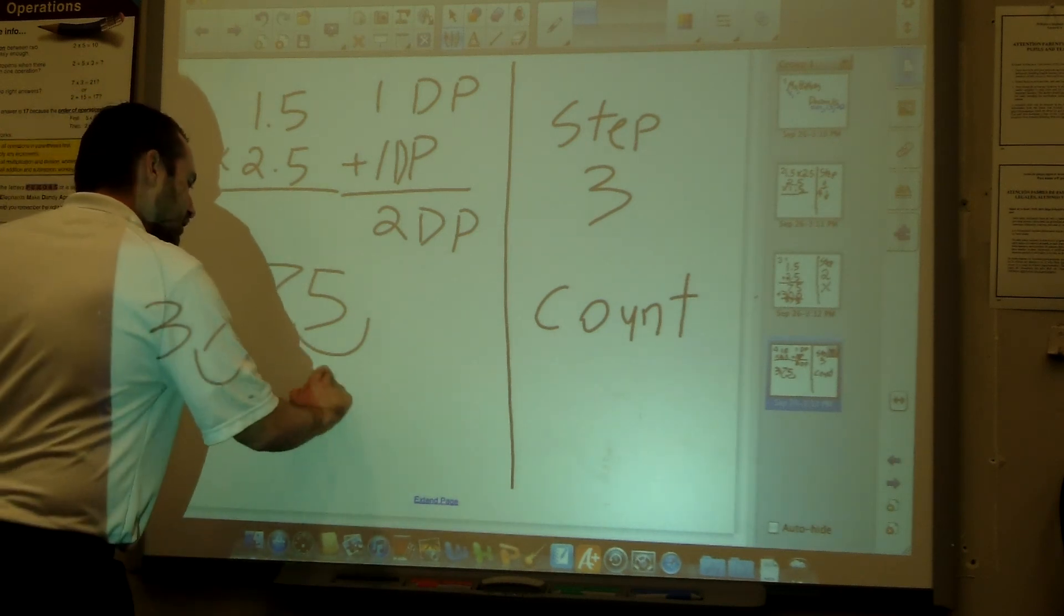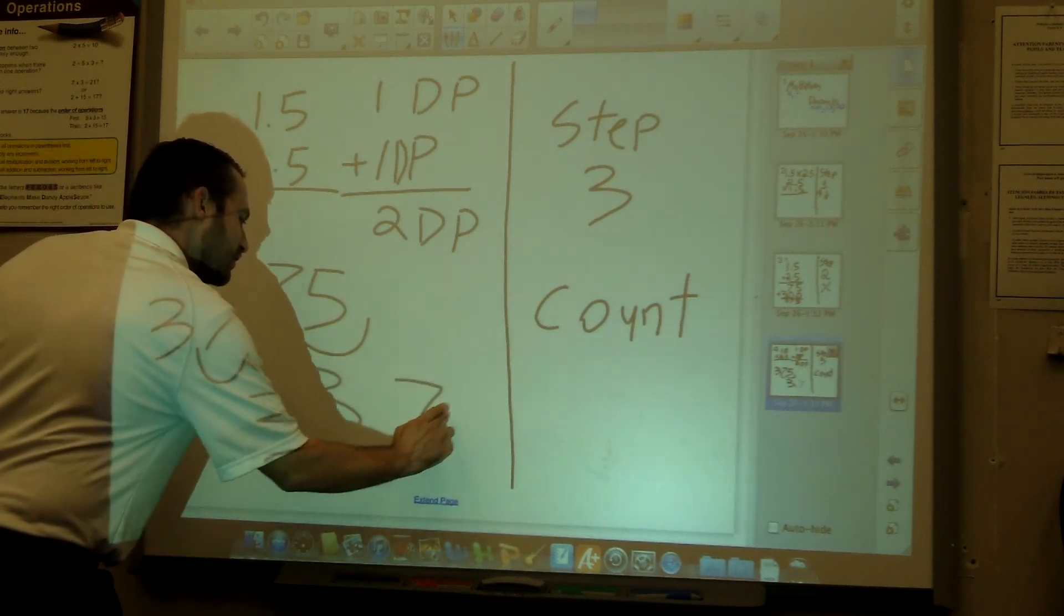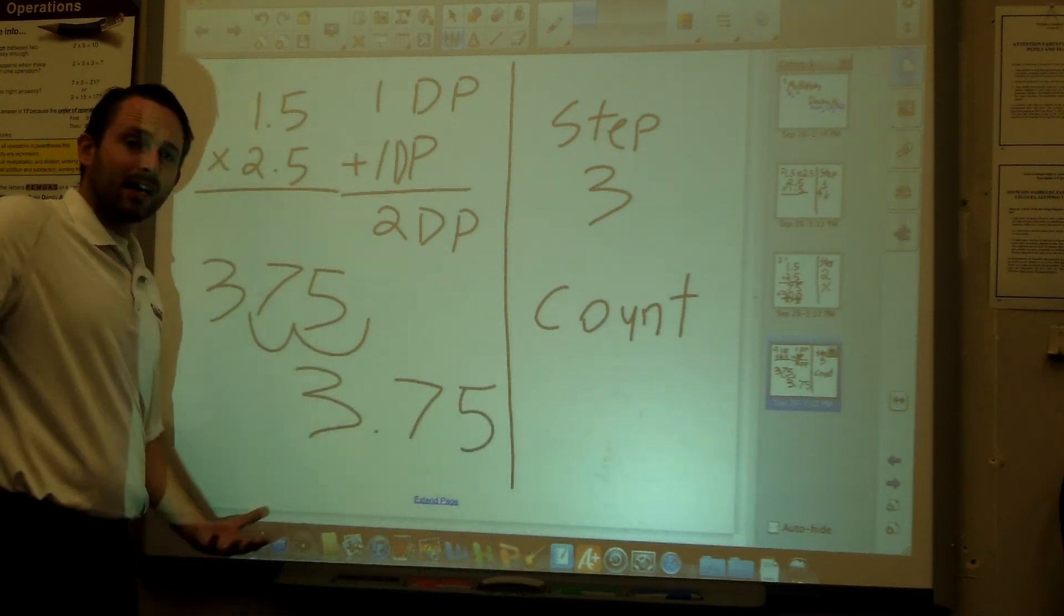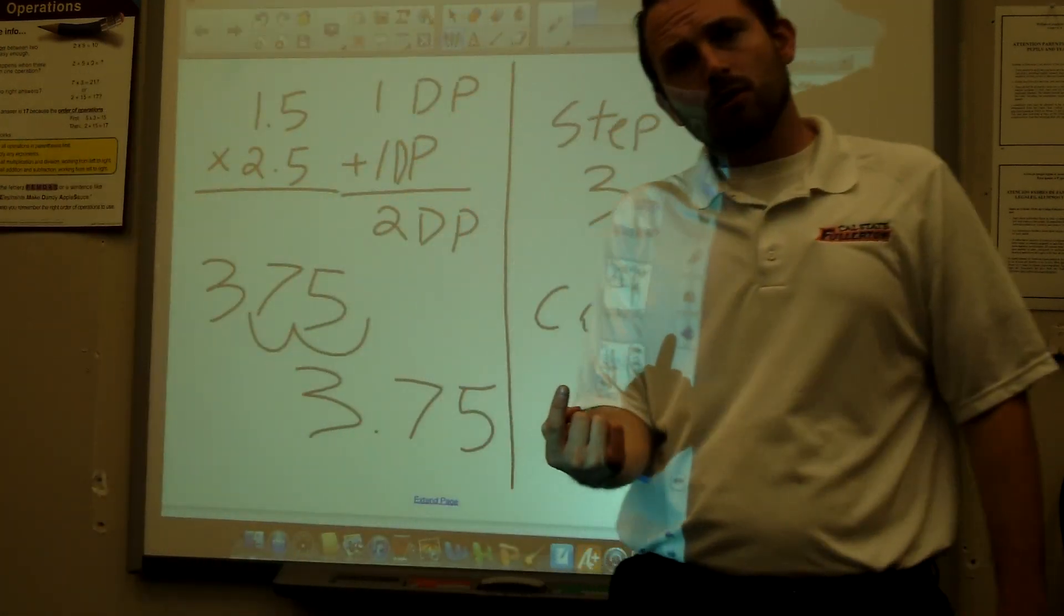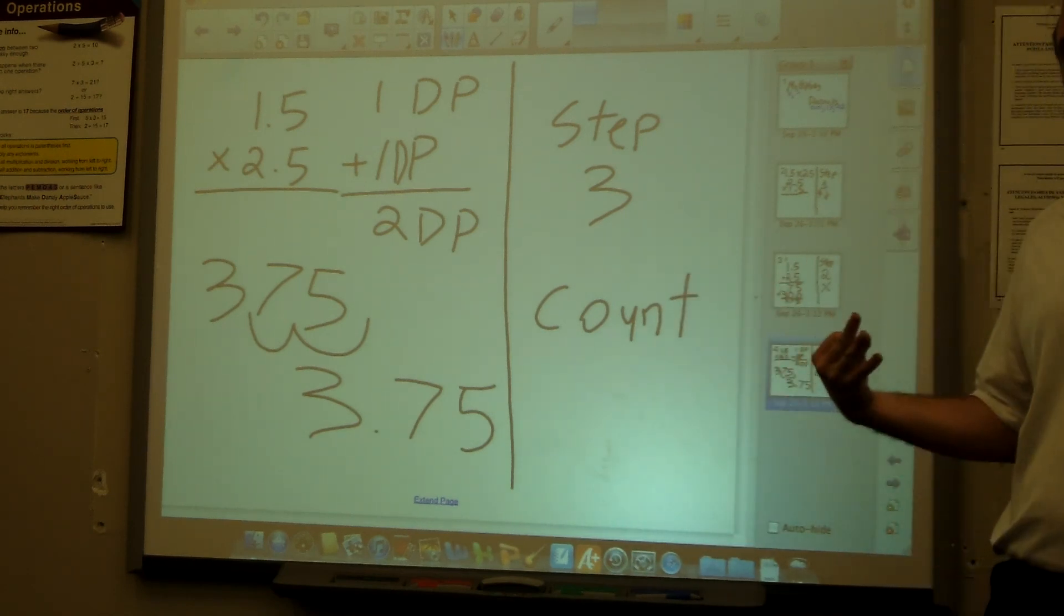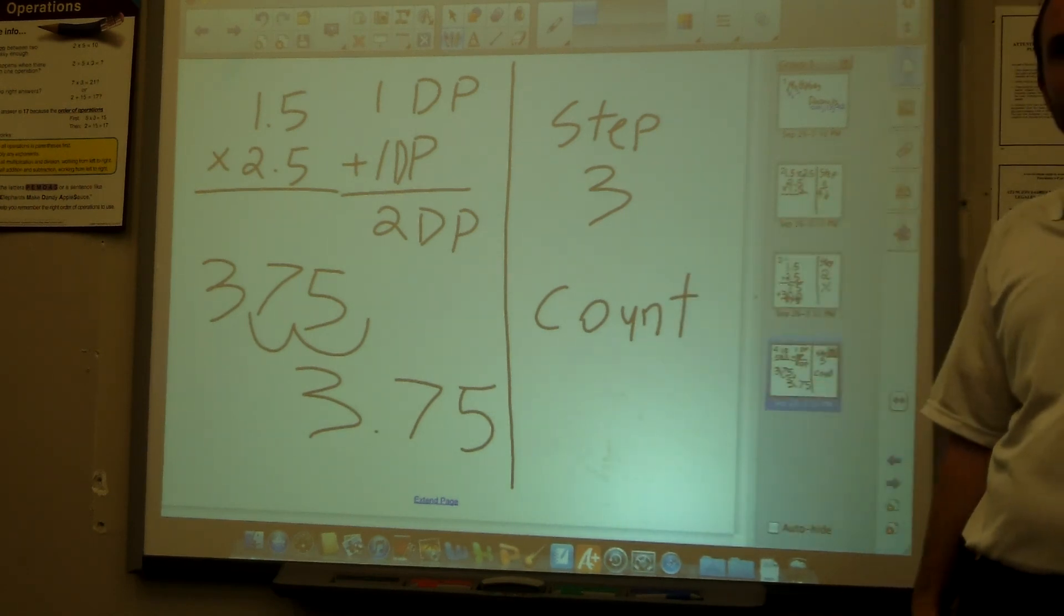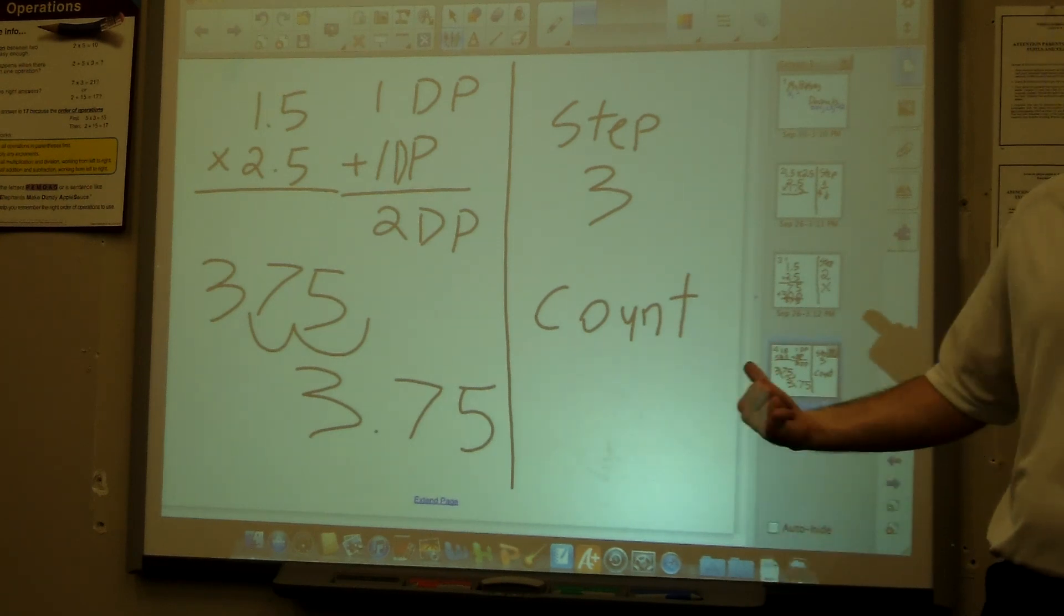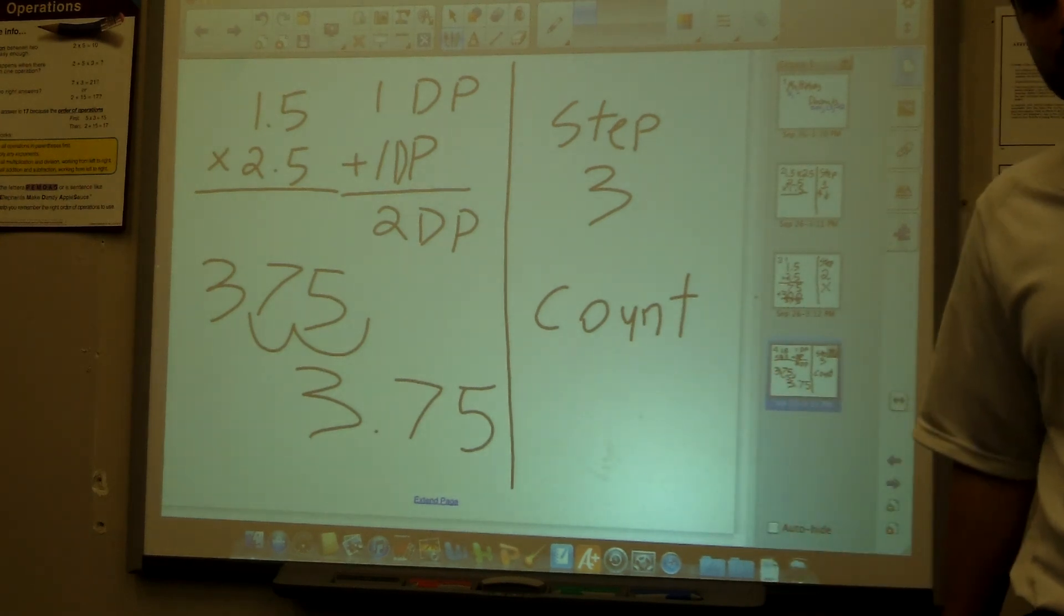Just follow the three steps: one, write up and down; two, multiply; and three, count the decimal places. Alright, thanks for being with me to learn how to multiply decimals.